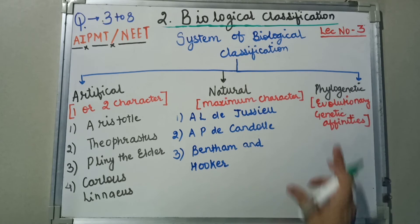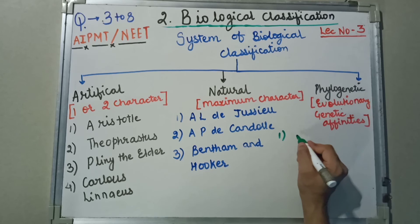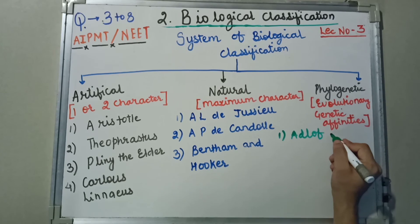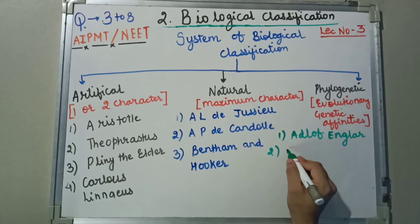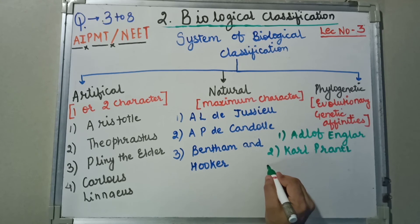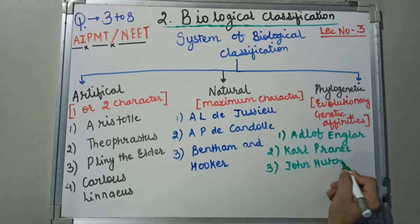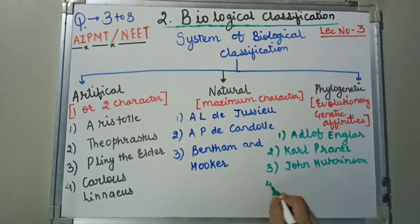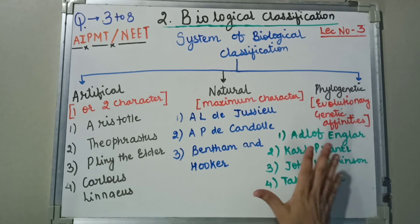Now let's see the third — phylogenetic classification. The scientists who worked on this: the first is Adolph Engler, the second is Carl Prantl, the third is John Hutchinson, and the fourth is Takhtajan. These were the scientists who worked on phylogenetic evolutionary relationships.